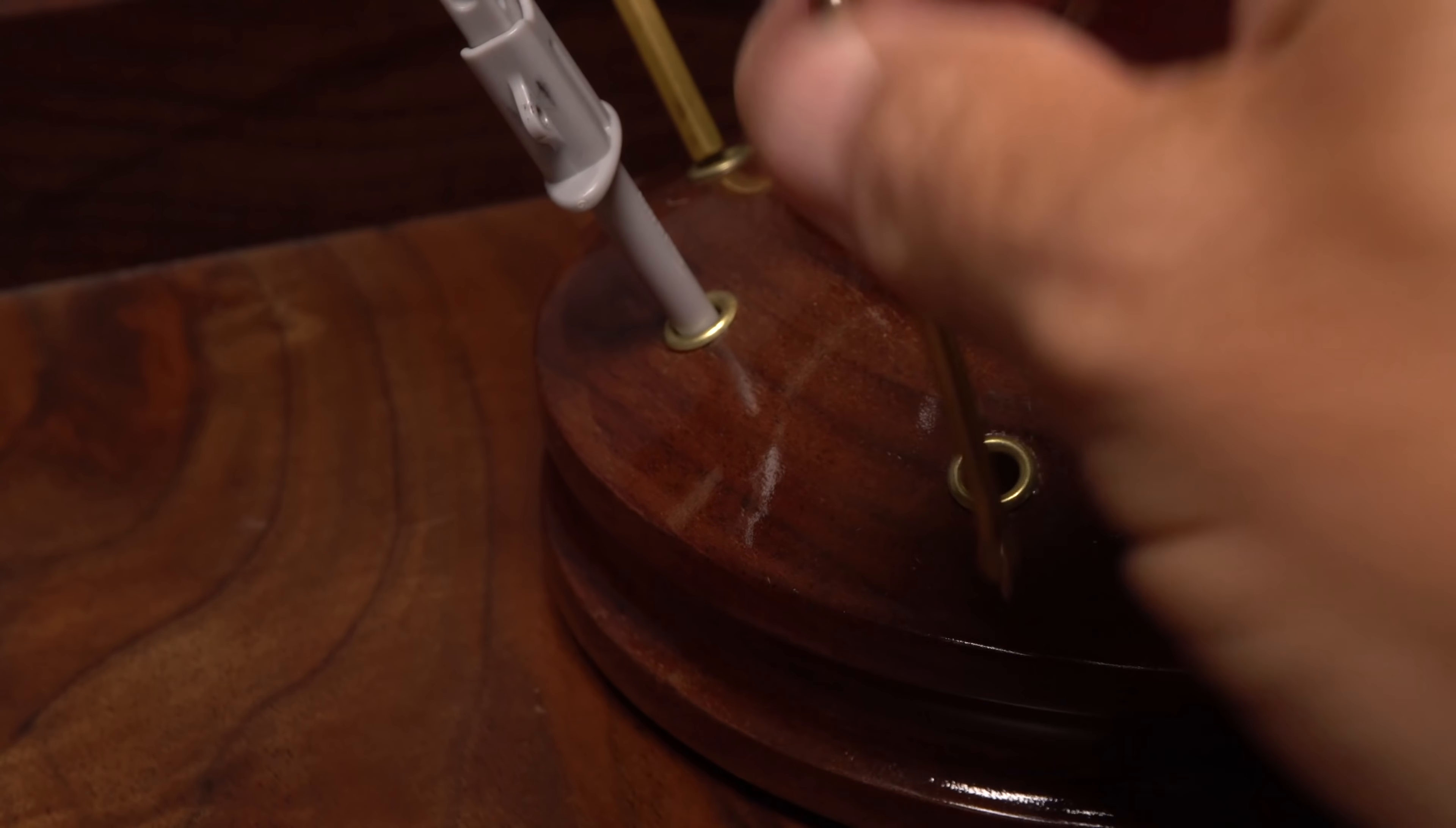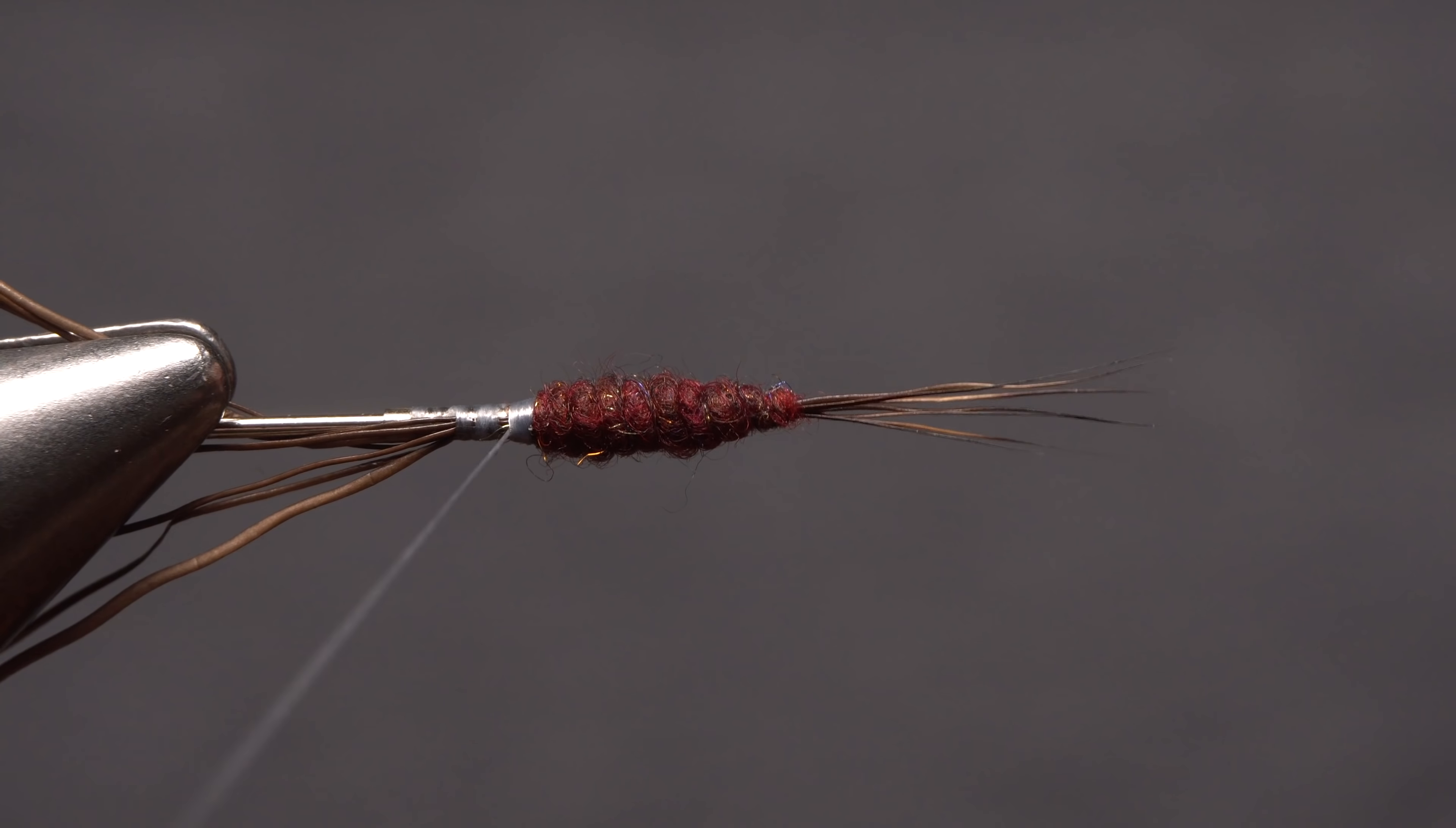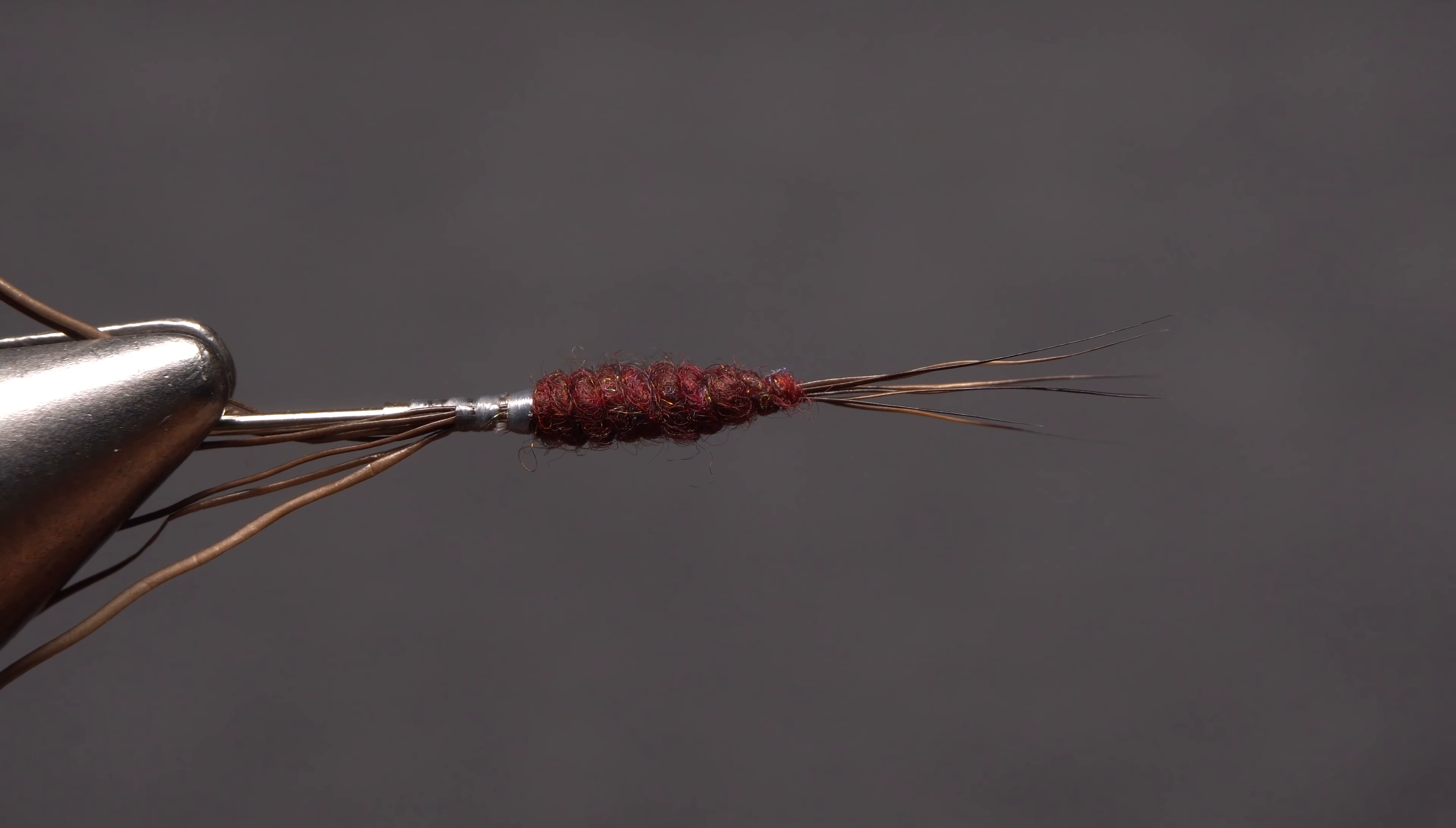Get hold of your whip finish tool and use it to do a 5 or 6 turn whip finish right at the end of the body. Seat the knot well and snip or cut your tying thread free. Firmly grip the body and give a little twist to pull it free from the needle.